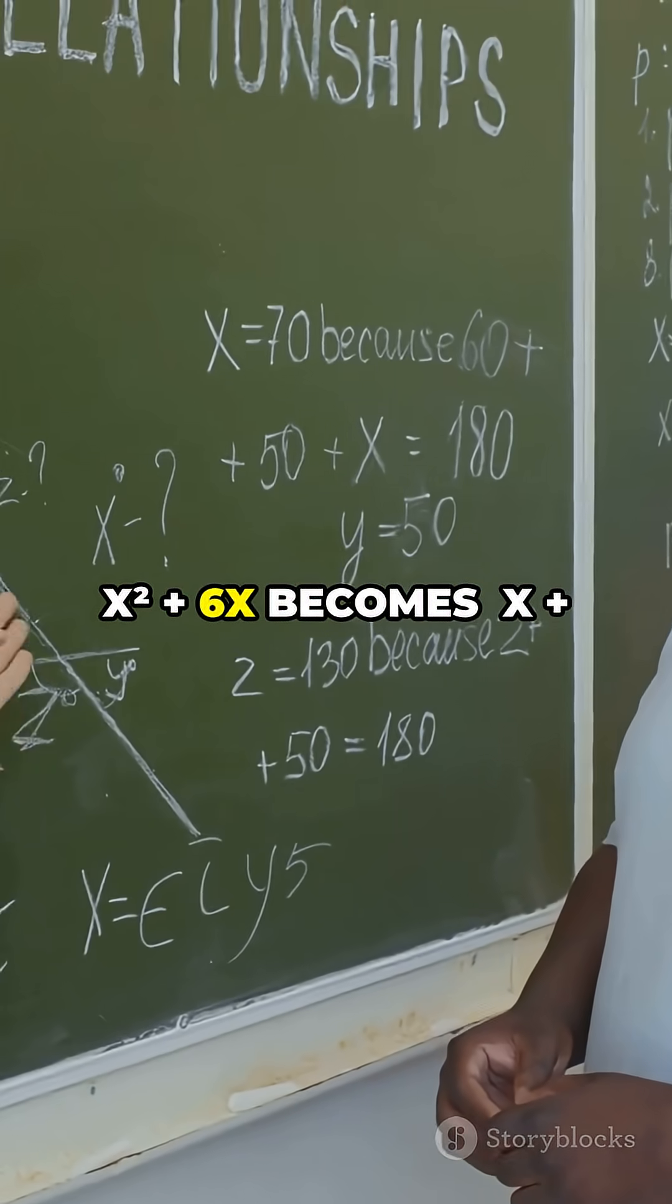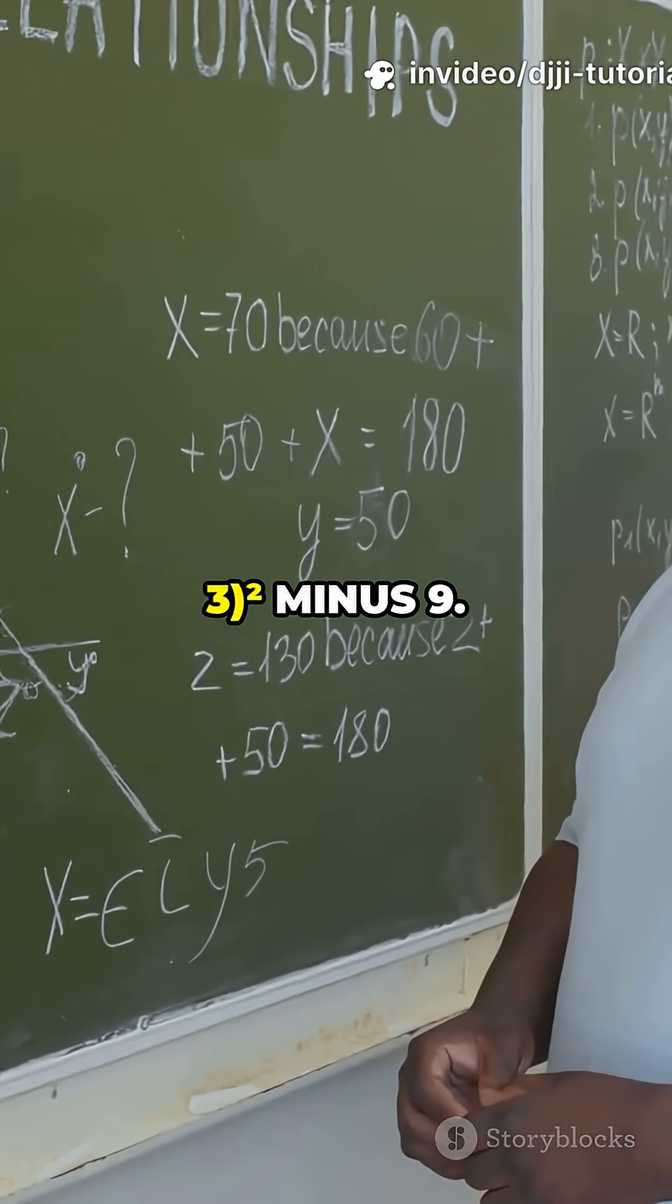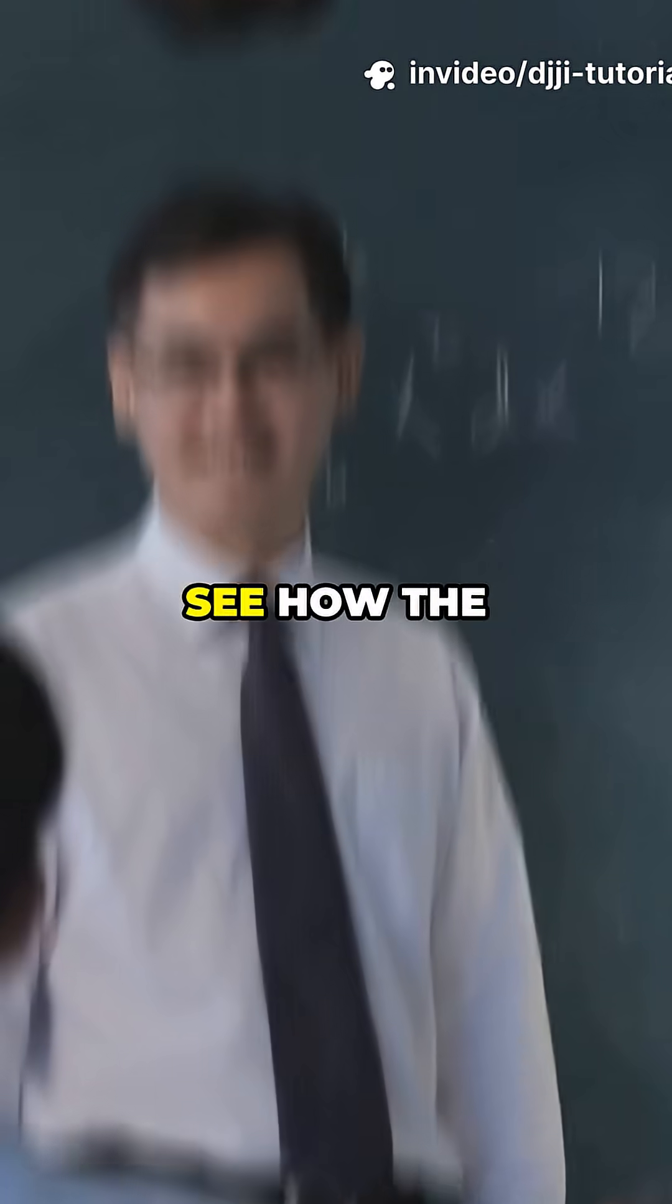So, x² + 6x becomes (x + 3)² minus 9. See how the pattern works?